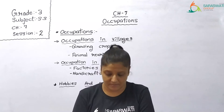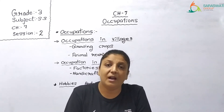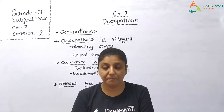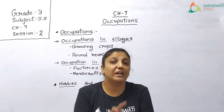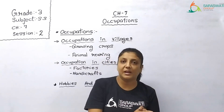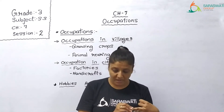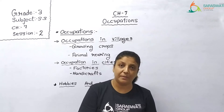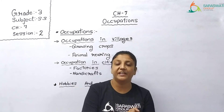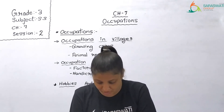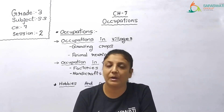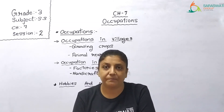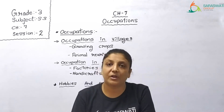Hen, duck, and geese — these birds are reared for their egg and meat. The farms where these animals are reared are called poultry farms. These birds are domesticated because they give egg and meat, which can be sold in the market. This occupation is called poultry farming. So to summarize: if animals are reared for milk, it is dairy farming; and if birds are reared for egg and meat, it is poultry farming.